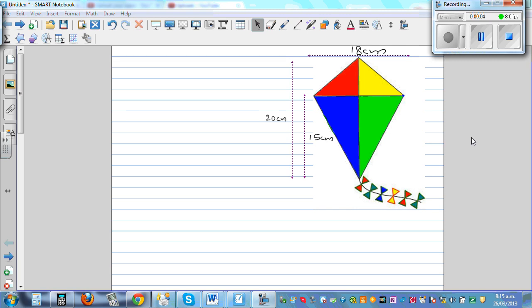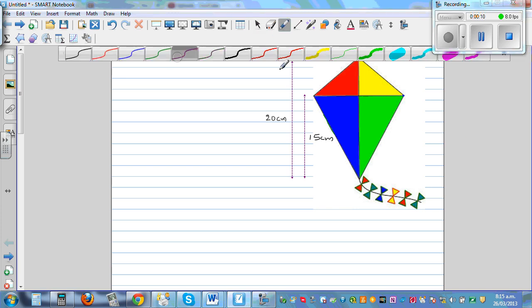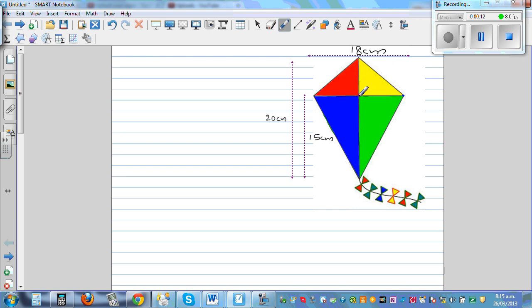Let's find the area of this kite. What are the measurements that we have? The distance from this point to this point is 15 cm. The whole vertical distance is 20, the horizontal distance is 15.